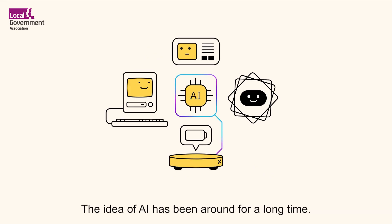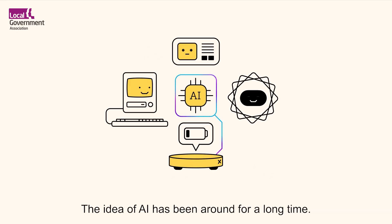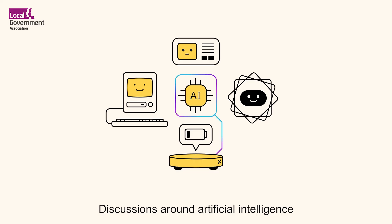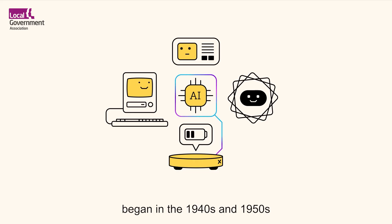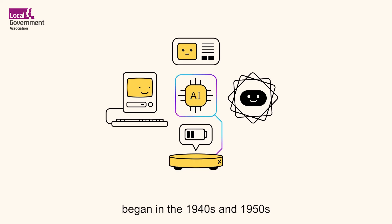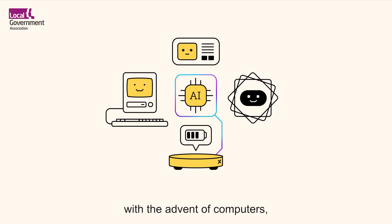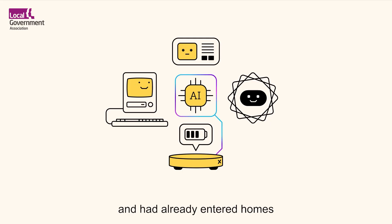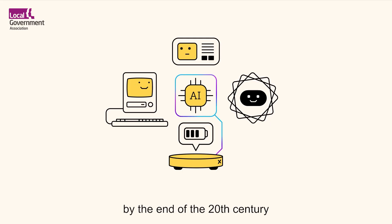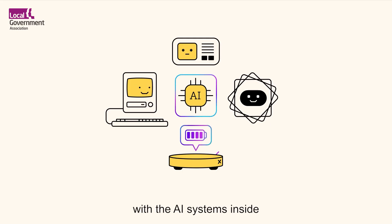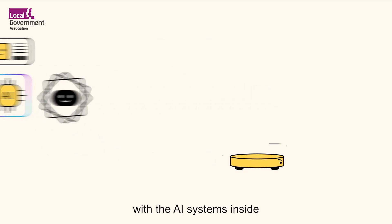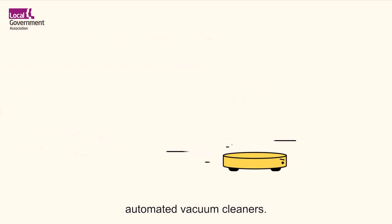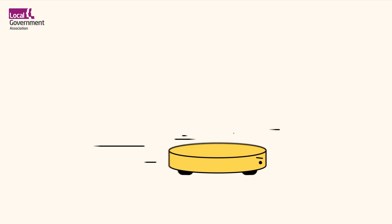The idea of AI has been around for a long time. Discussions around artificial intelligence began in the 1940s and 1950s with the advent of computers, and had already entered homes by the end of the 20th century with the AI systems inside automated vacuum cleaners.